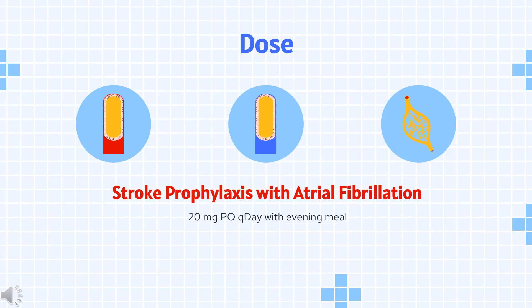Dose – Stroke prophylaxis with atrial fibrillation: Indicated to reduce the risk of stroke and systemic embolism in patients with non-valvular atrial fibrillation. Dosing is 20 mg orally once daily with the evening meal. There is limited data on efficacy of rivaroxaban versus warfarin in reducing the risk of stroke and systemic embolism when warfarin therapy is well controlled.